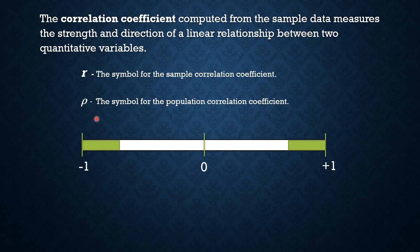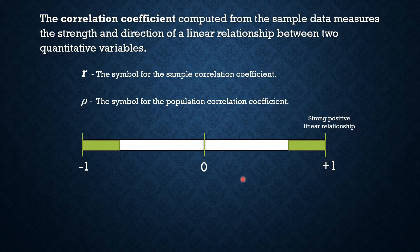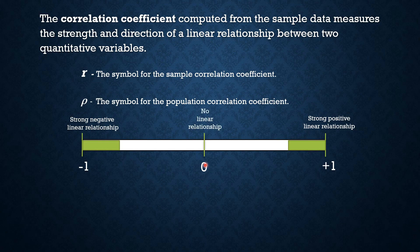The range of the correlation coefficient is from negative 1 to positive 1. If there is a strong positive linear relationship between the variables, the value of R will be close to positive 1. If there is a strong negative linear relationship, the value of R will be close to negative 1. And when there is no linear relationship or only a weak relationship, the value of R will be close to 0.